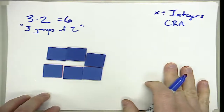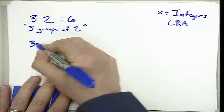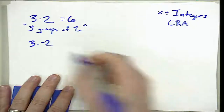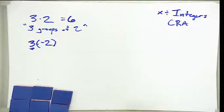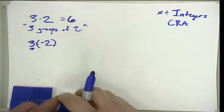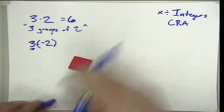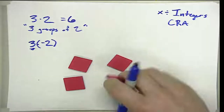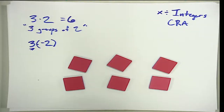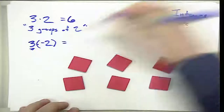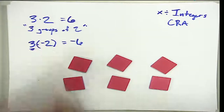We're not going to change that definition just because we're working with integers. So if we alter this problem to be three times negative two, it's still three groups — the only thing that's changed is what we have groups of. Instead of positive two, we have groups of negative two. Three groups of negative two give me a product of negative six.